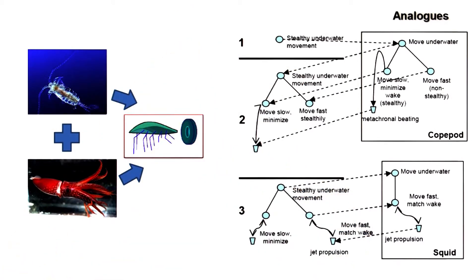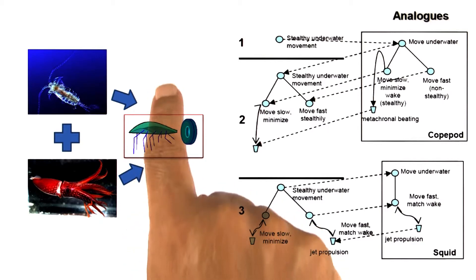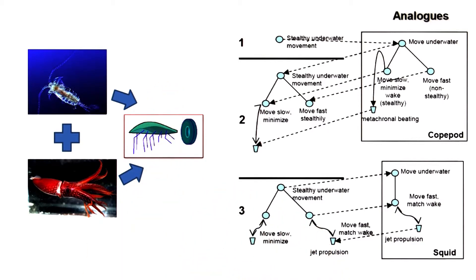Here is another brief example from biologically-inspired design. In this case, we want to design a robot that can swim underwater in a very stealthy manner. This particular function of swimming underwater in a stealthy manner reminds a design team of a copepod.